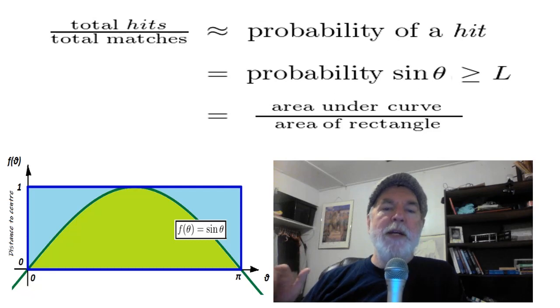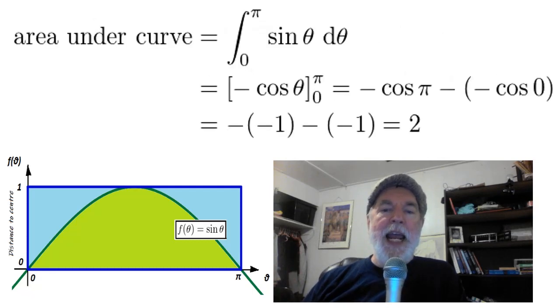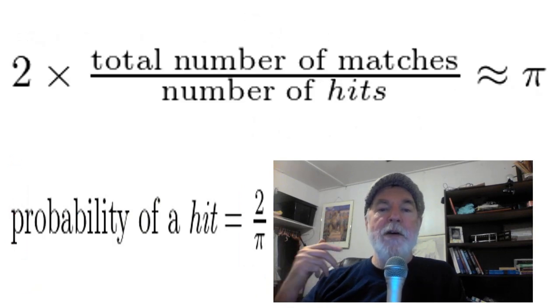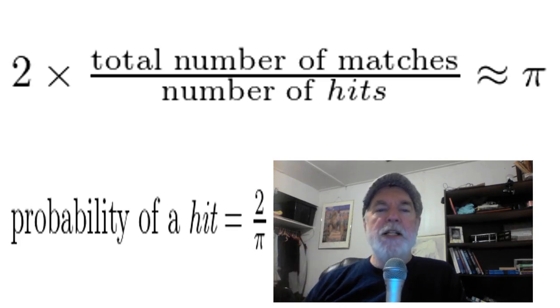So the area under the sine curve—we can integrate between zero and pi, and that gives us the number two. So the probability of a hit is two divided by pi. Now we go back to our original equation, and we see how our playing with matches has approximated pi. Bob's your uncle.